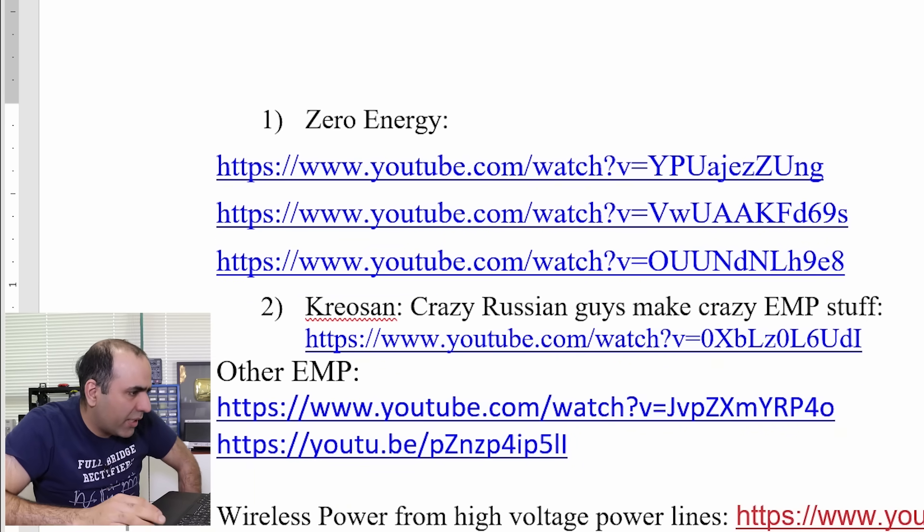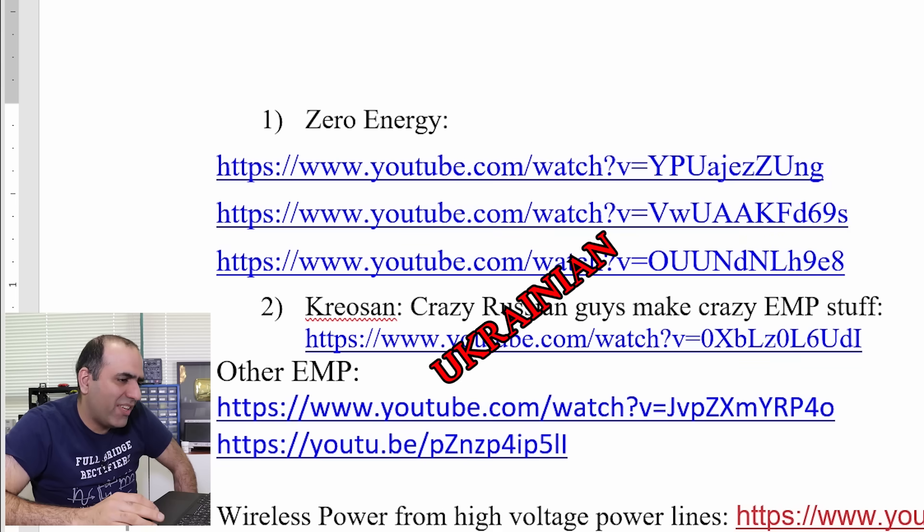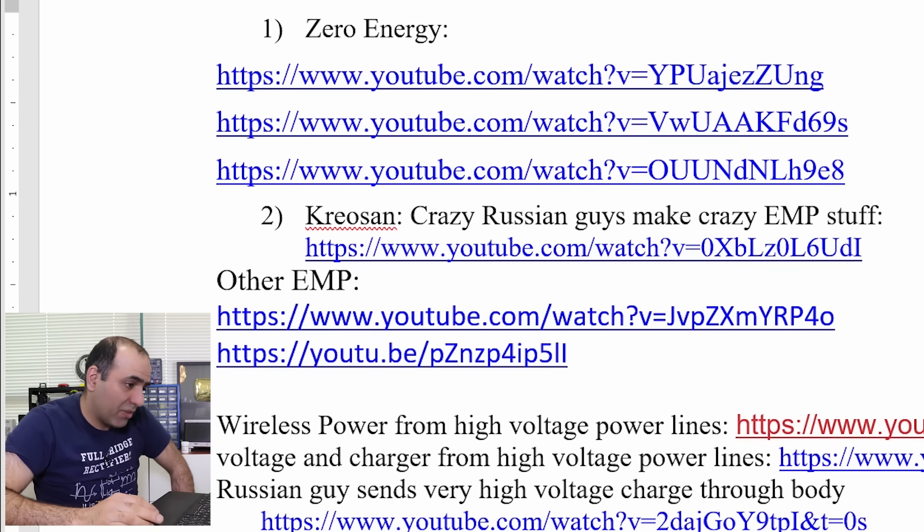What else do we have? Zero energy. Croson, crazy Russian guys make crazy EMP stuff. Yeah, some of their stuff is crazy. I'll do this later. I got enough cancer for one day.